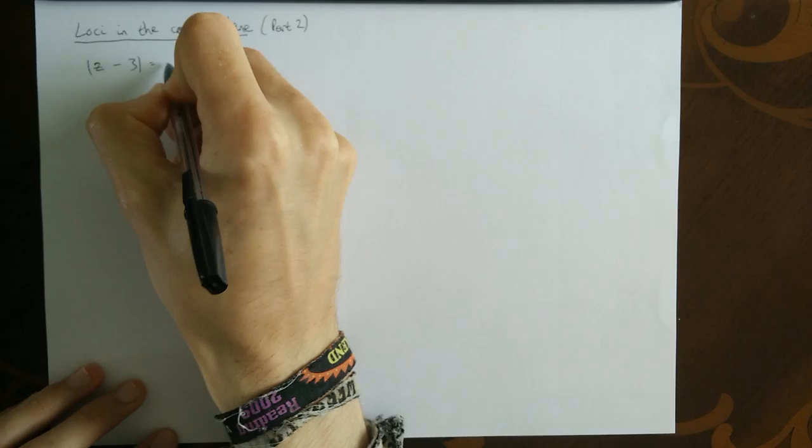So let's just jump straight in with an example. Here we've got the modulus of z minus 3 is equal to the modulus of z minus 5. That ends up being a straight line. In fact it's a very special straight line, it's related to the 3 and the 5.